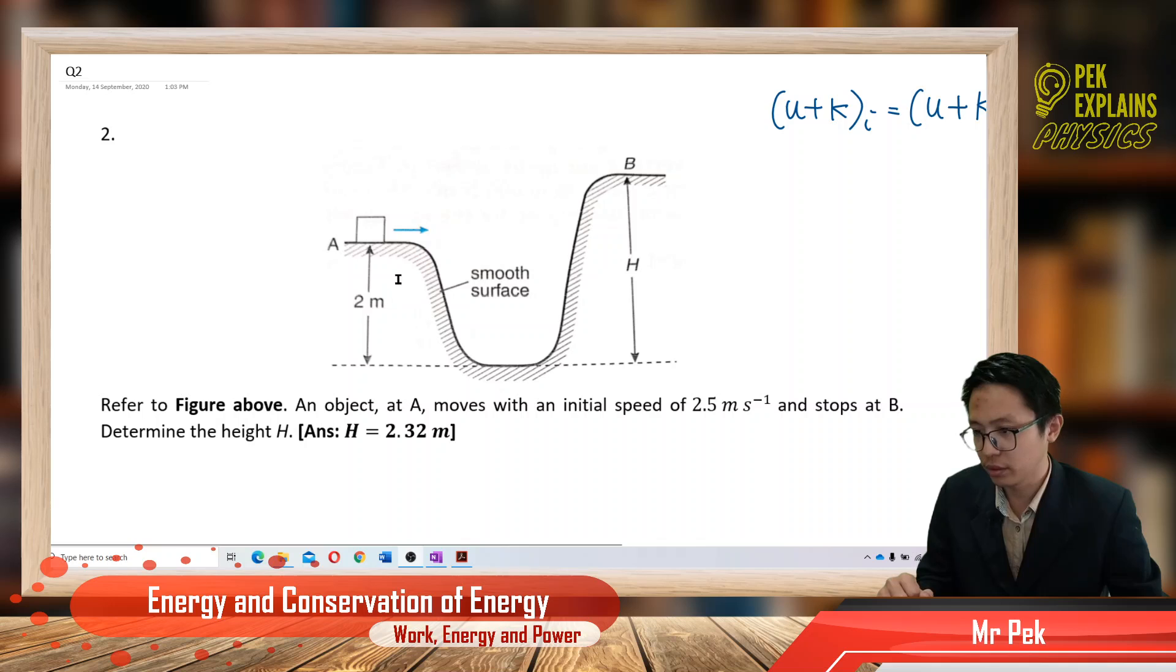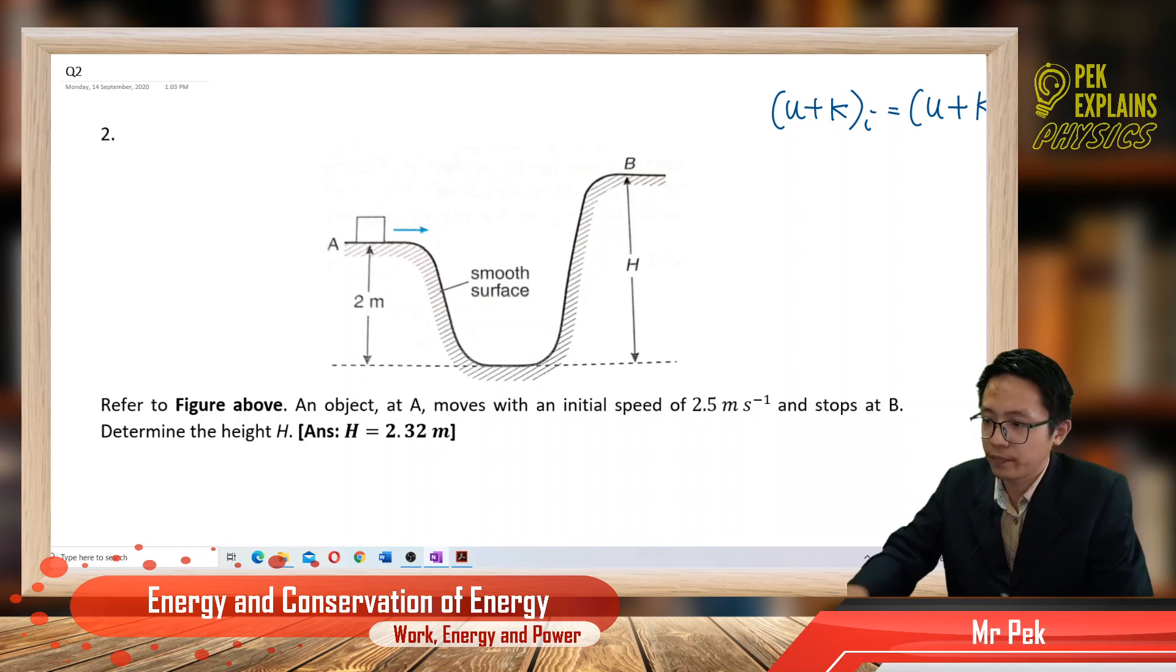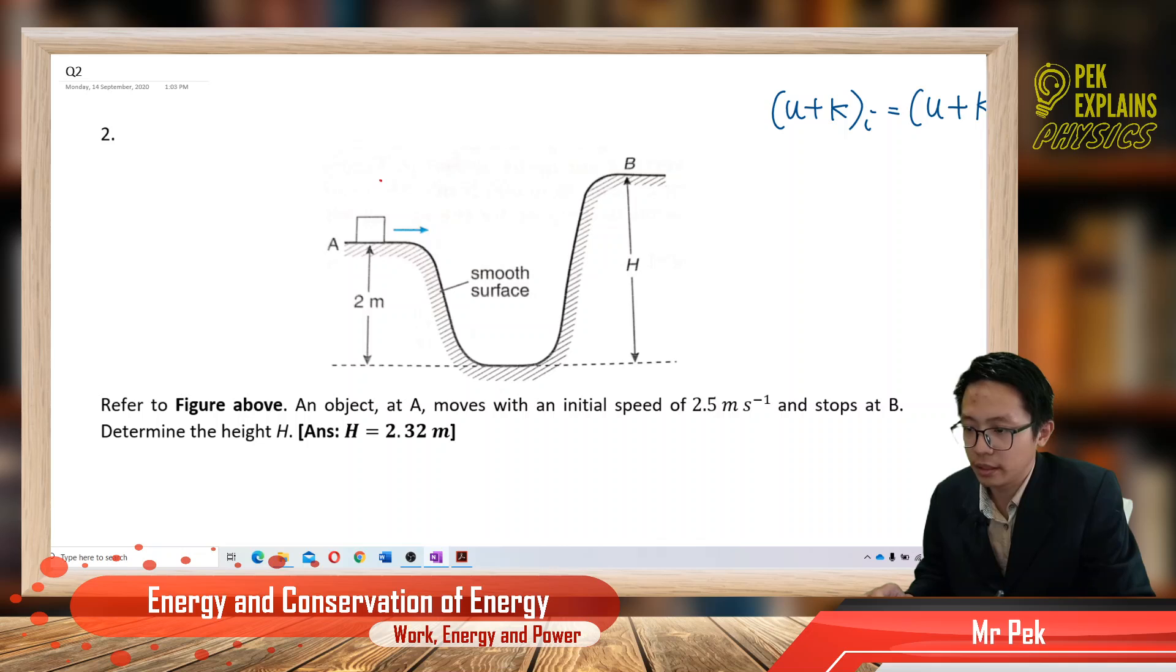Alright, so this object at A moves to B. We apply the principle of conservation of mechanical energy. First of all, determine the initial and final condition. This is the initial condition and this is the final condition.